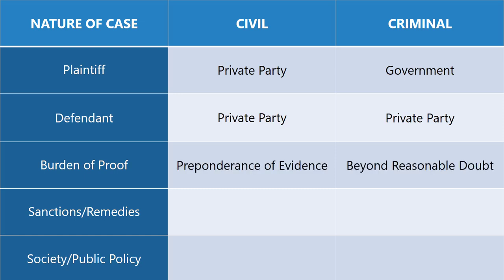In order for a plaintiff to prevail in a civil lawsuit, there has to be a preponderance of evidence that supports the case and its alleged facts. The burden of proof is more stringent in criminal law — the test of evidence required is beyond a reasonable doubt.